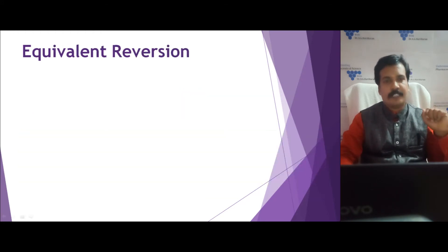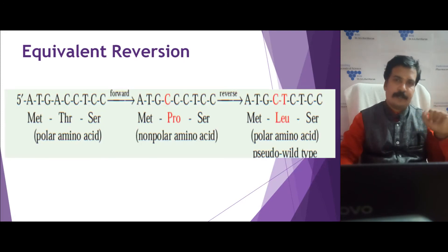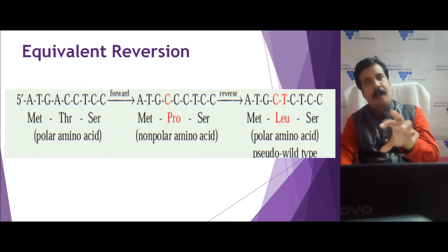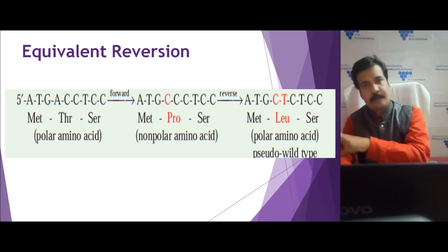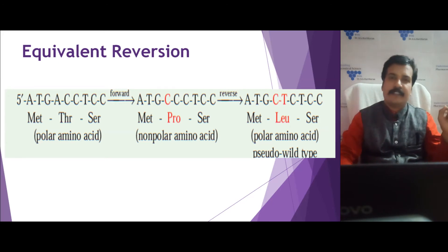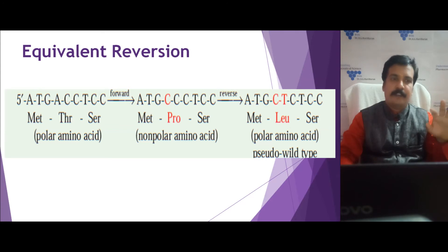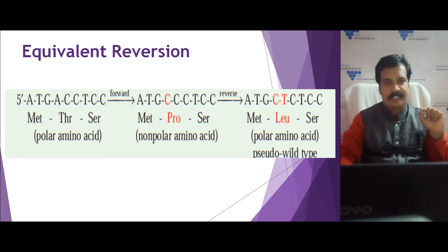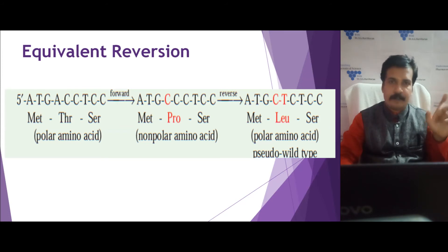The second type is equivalent reversion. In equivalent reversion, a wild type is converted to a mutant type, and a second mutation occurs at the same location producing a different triplet codon, which codes for a similar type of amino acid. As seen in the figure, methionine, threonine, and serine — threonine is coded by ACC, which is a polar amino acid.